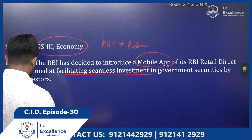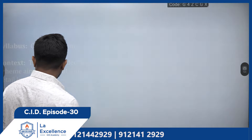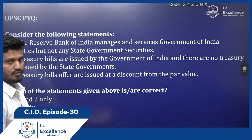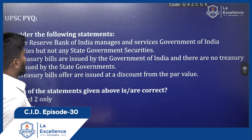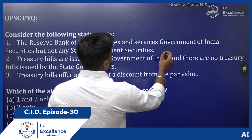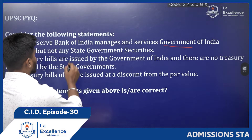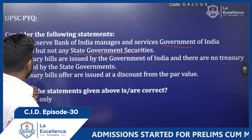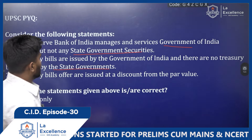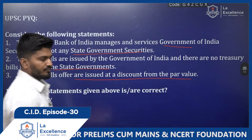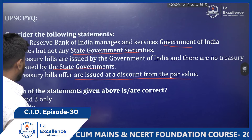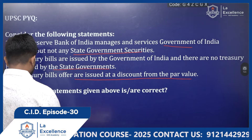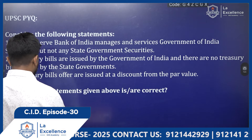Here is a practice question from a previous paper. Consider the following statements: (1) The RBI manages and services government of India securities but not any state government securities. (2) Treasury Bills are issued by the Government of India and no Treasury Bills are issued by the state governments. (3) Treasury Bills are issued at a discount from the face value. Which of these is correct? Do write your answer in the comment box.